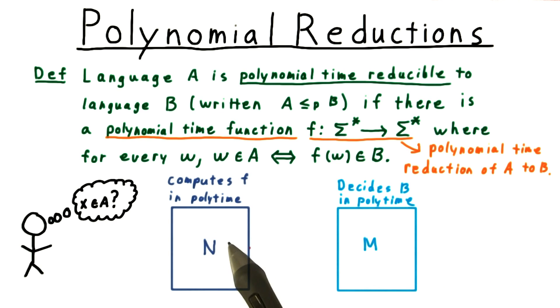Then all I need to do is take the machine or program that computes this reduction function, let's call it N, and feed my string x into it, and then feed that output into M.